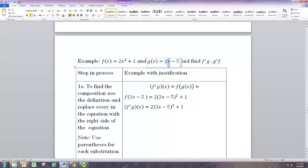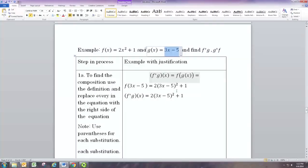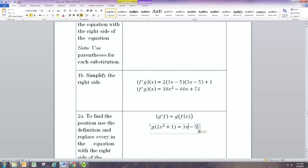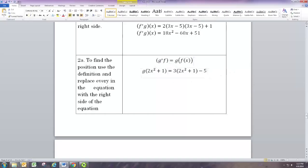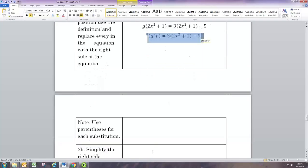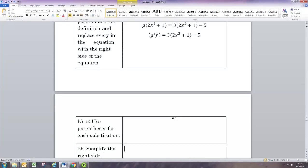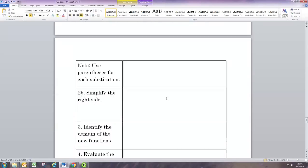So that's g of f of x. And that means we'll be replacing the input for g with 2x squared plus 1. That's the output for f. So f of x equals 2x squared plus 1. So that's our input. And what does the g equation look like? So we're just going to take this equation and replace x with the 2x squared plus 1. And we get something like that.